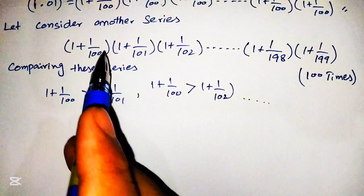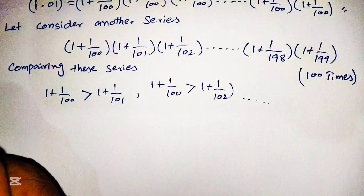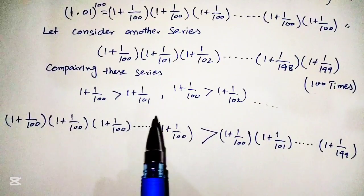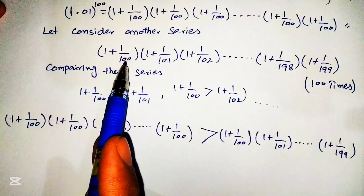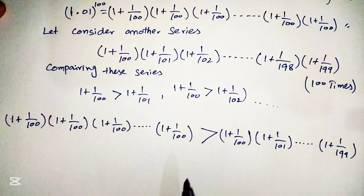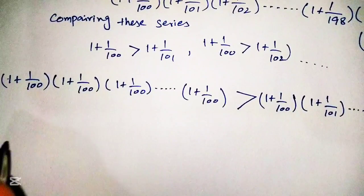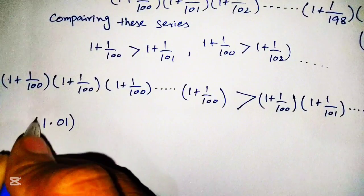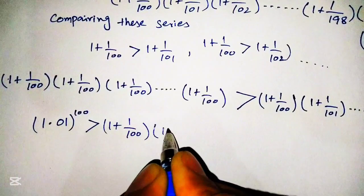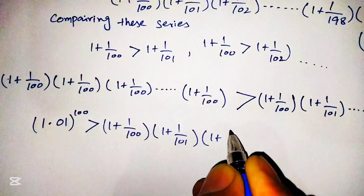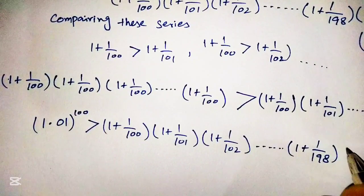From this we conclude that the original expression is greater than the comparison series. So we write: 1.01 raised to the power 100 is greater than (1 + 1/100) × (1 + 1/101) × (1 + 1/102) × ... × (1 + 1/198) × (1 + 1/199).